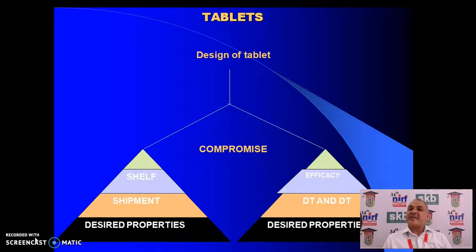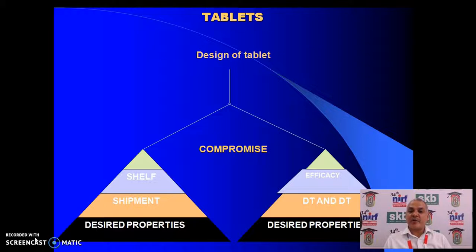Now coming to tablets. In the design of a tablet, we have to trade off between pharmacology and pharmaceutics. From the manufacturing point of view, we want higher shelf life, good shipment properties, low friability, and good hardness. But if there is too much hardness or too little friability, the efficacy of the tablet is questioned, and disintegration time and dissolution time may be affected. So we have to trade off between pharmacology and pharmaceutics on both sides.